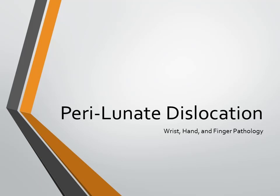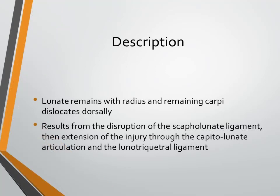A perilunate dislocation is a wrist dislocation in which the lunate remains with the radius and the remaining carpi dislocates dorsally. The scaphoid and the lunate remain stable, but the scaphoid fractures and the other carpi dislocate. This results from the disruption of the scapholunate ligament, then extension of the injury through the capitolunate articulation and the lunotriquetral ligament.